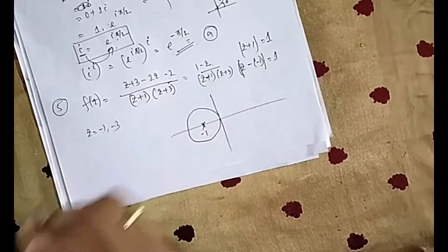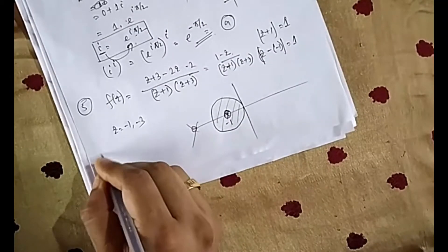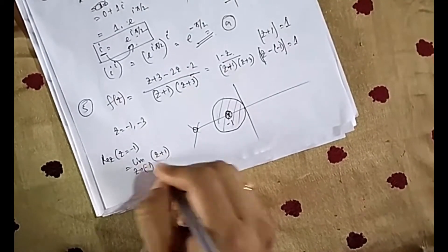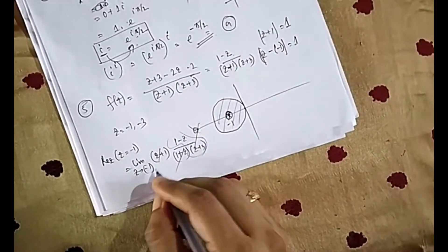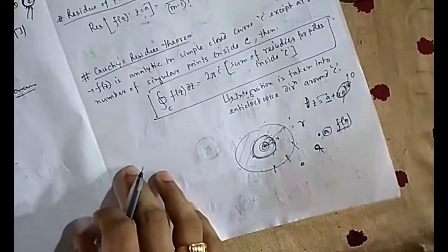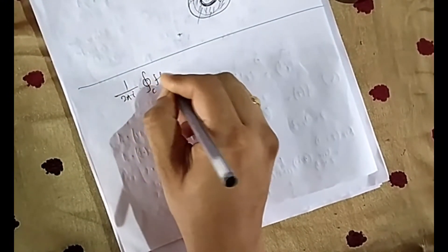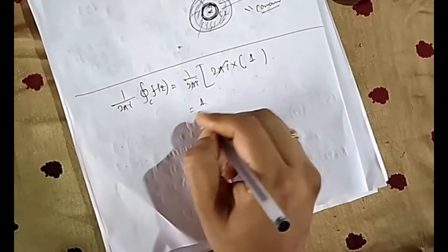The poles are at z = −1 and z = −3. Only z = −1 lies inside the contour. We calculate the residue at z = −1 using: limit as z → −1 of (z + 1) multiplied by the original function, which removes the (z + 1) factor. Substituting z = −1 gives residue = 1. So the contour integral equals 2πi × 1 = 2πi.